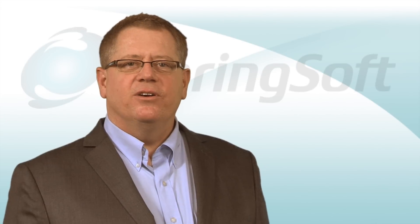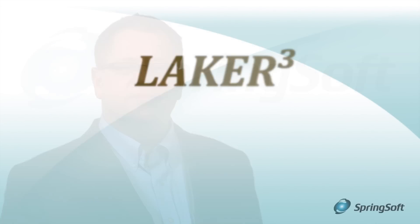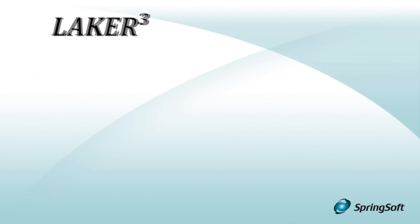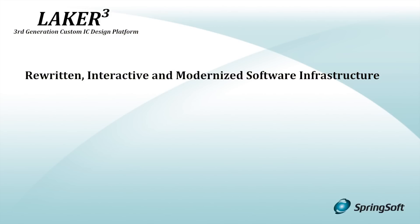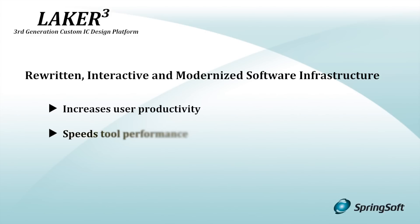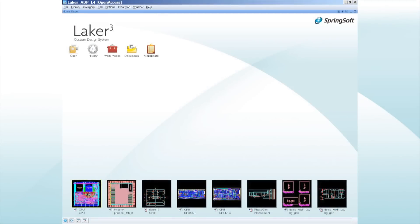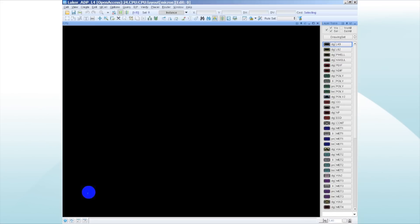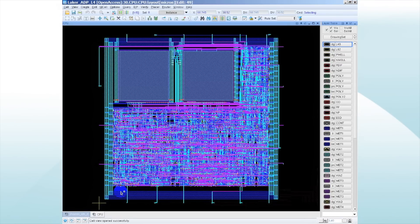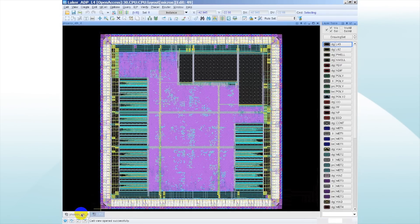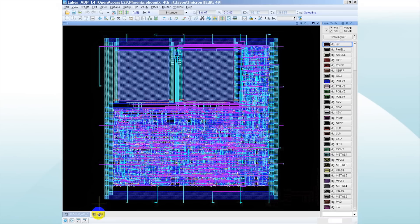Now let's dive into what's new with Laker 3. The Laker 3 platform has a rewritten interactive and modernized software infrastructure that increases user productivity, speeds tool performance, and introduces innovative new automation capabilities that are tuned for 28 and 20 nanometer custom design flows. It features an updated graphical user interface with modern conventions such as window tabbing, dockable windows, and a QT-based look and feel.